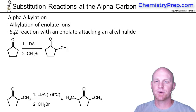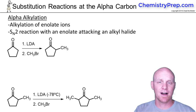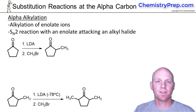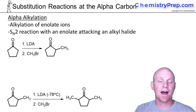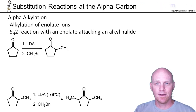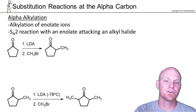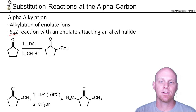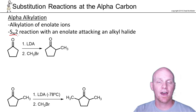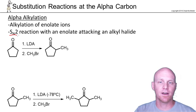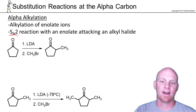The next alpha substitution reaction we're going to look at is called alpha alkylation. We'll just be replacing one of the alpha hydrogens with an alkyl group. It's going to happen via SN2. There's no acid-catalyzed version of this — we're just going to do this in a base-catalyzed fashion.